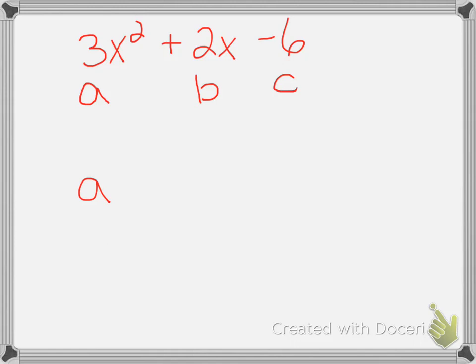So, then in this case, what do you think a is going to be equal to? Okay, if you said three, that's correct. Now, look at b. b is equal to two, and c is equal to negative six.